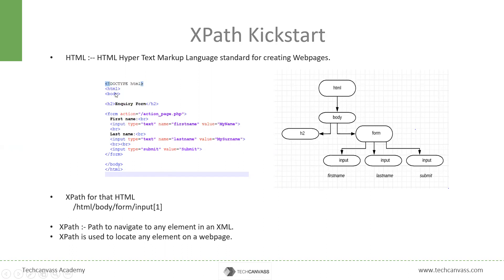So HTML, body, H2, form — these are all tags. And inside the tags, for example, inside the input tag, 'type' is its attribute and 'text' will be the value of the attribute. Similarly, 'name' and 'value' are other attributes and their respective values.